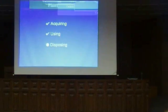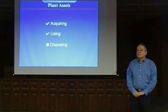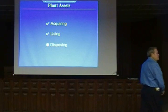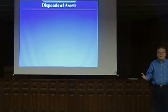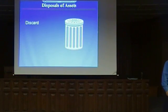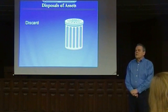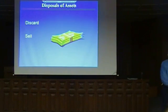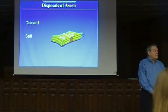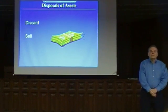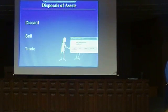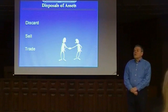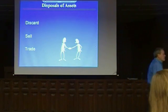We've talked about buying assets and recording them at cost, and using them with the straight line, units of activity, and declining balance formulas. Now let's talk about disposing of assets. There are three ways to get rid of an asset we're finished with: we could simply throw it away and discard it; we could sell it and try to get money out of it; or we could trade this asset for another asset.